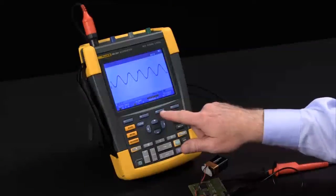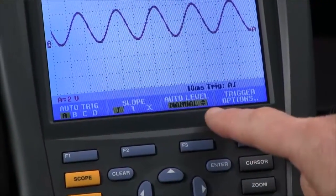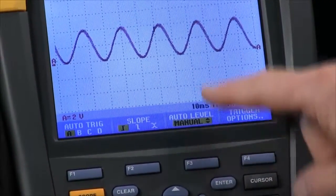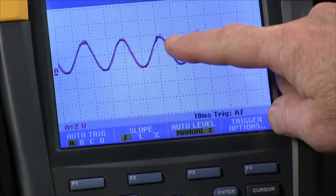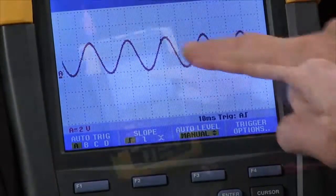If we want to adjust our level, we hit F3, and we're in manual control right now. My trigger point is a little black indicator right in the center of the screen.